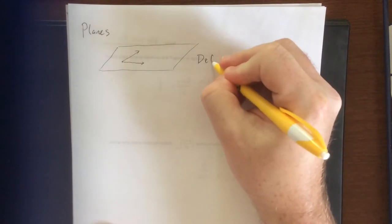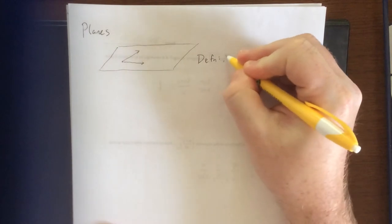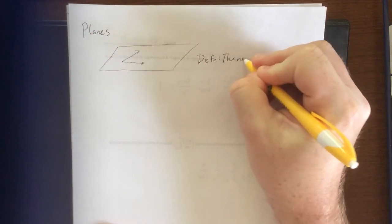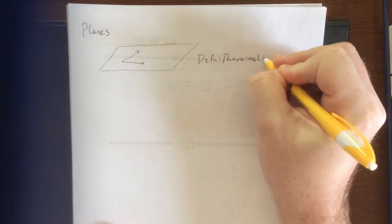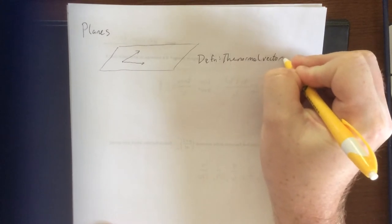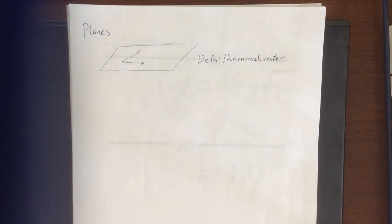We are going to define a new thing. It's referred to as the normal vector. A normal vector for a given plane would be the vector that is orthogonal to every other vector within the plane.